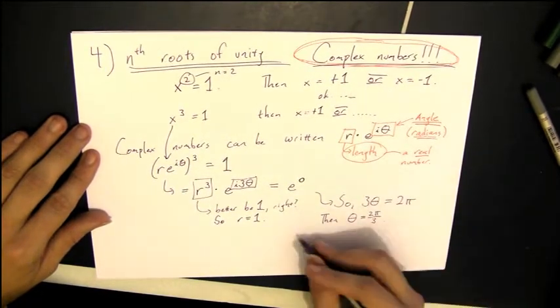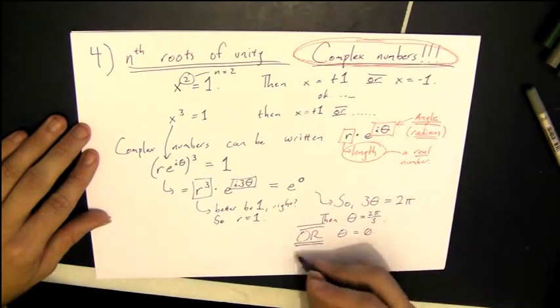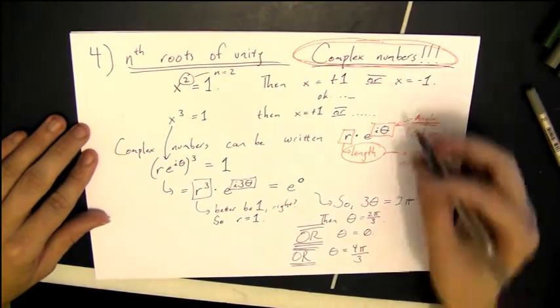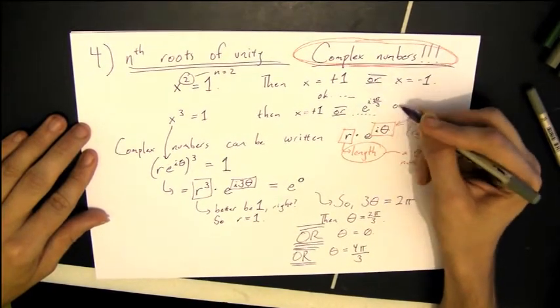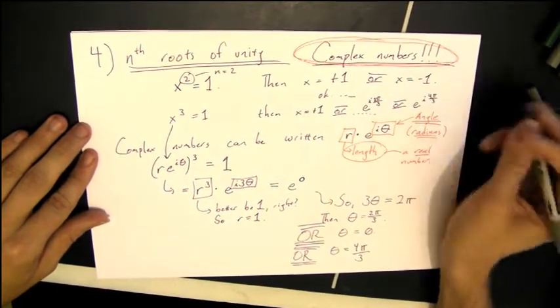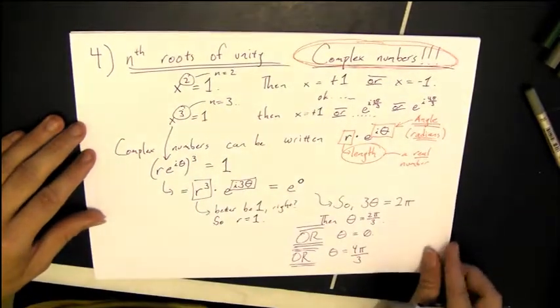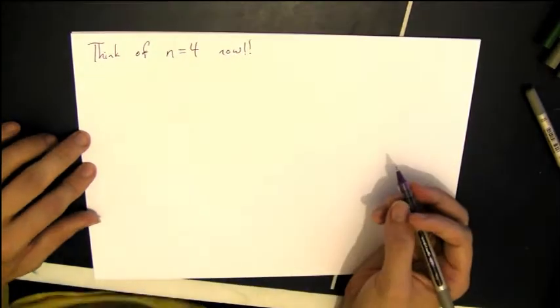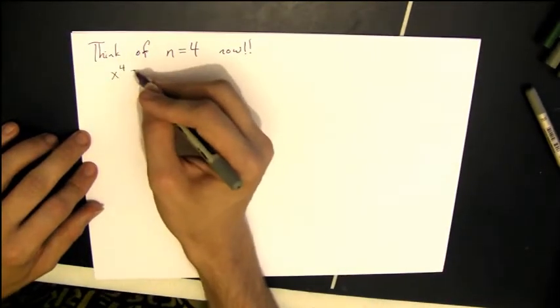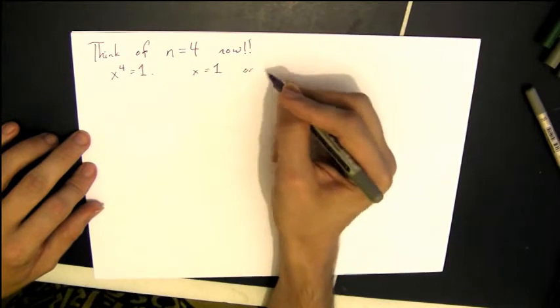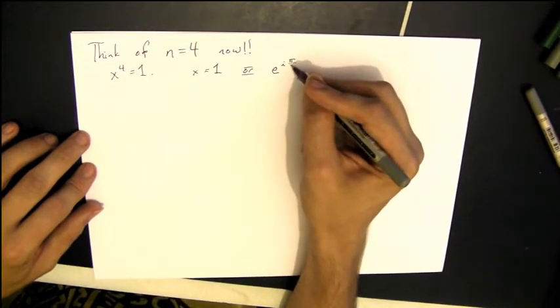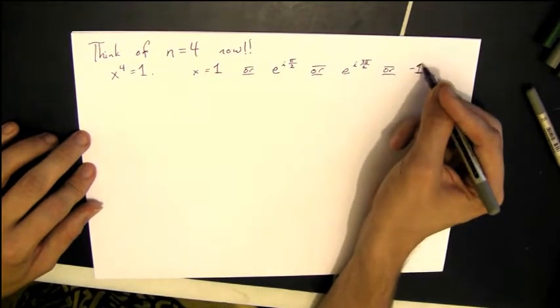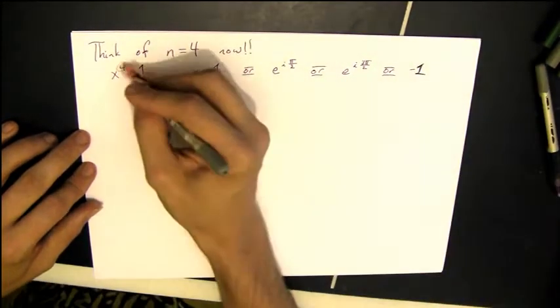Or, you know, 2 pi is the same as 0, so you can also take theta equal to 0. And 2 pi is the same as 4 pi, so you can also take theta equal to 4 pi over 3. So in fact, we get 3 different solutions to x cubed equals 1. Now if we think of n equals 4, you can sort of play through the same game. So we've got x to the 4th equals 1, so x could be 1, which is the same as e to the 0. Or it could be e to the i pi over 2, or e to the 3 pi over 2, or it could be negative 1. For n equals 4, we get 4 solutions.